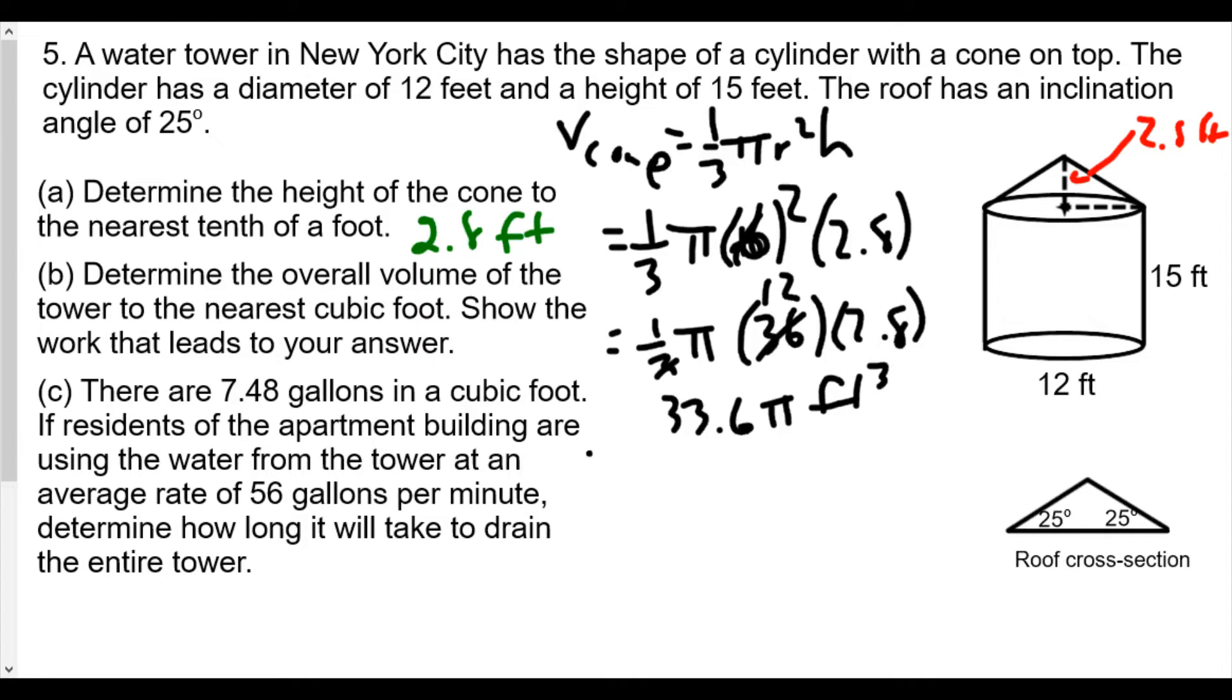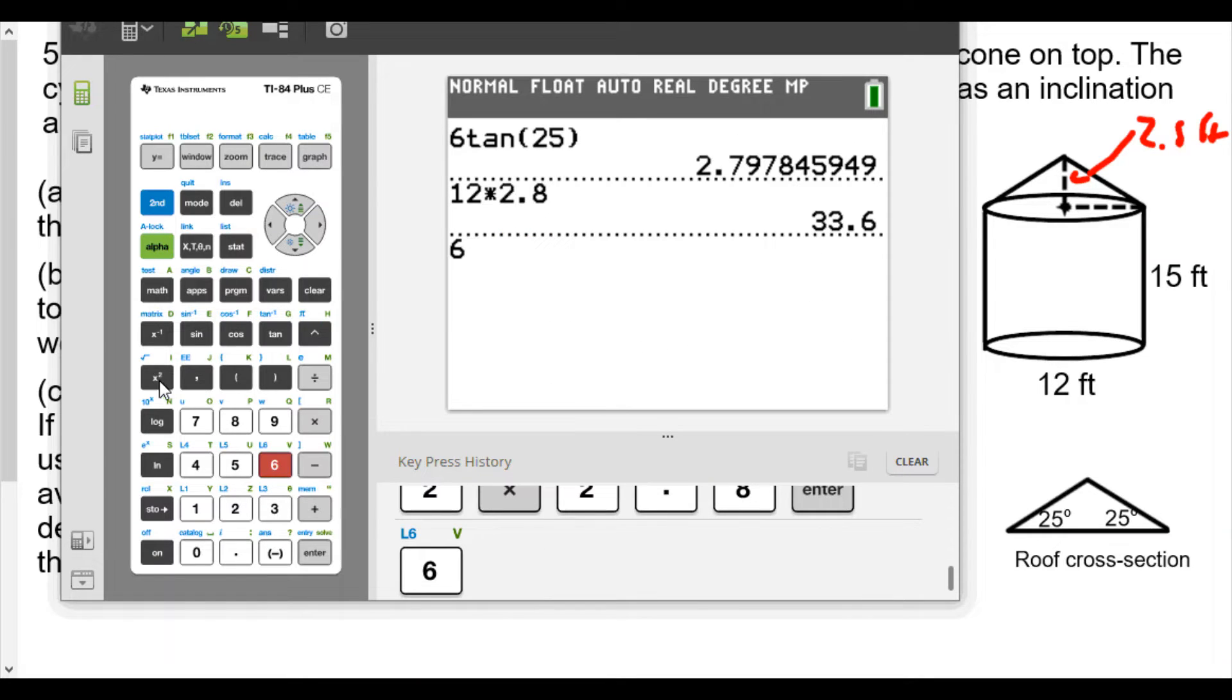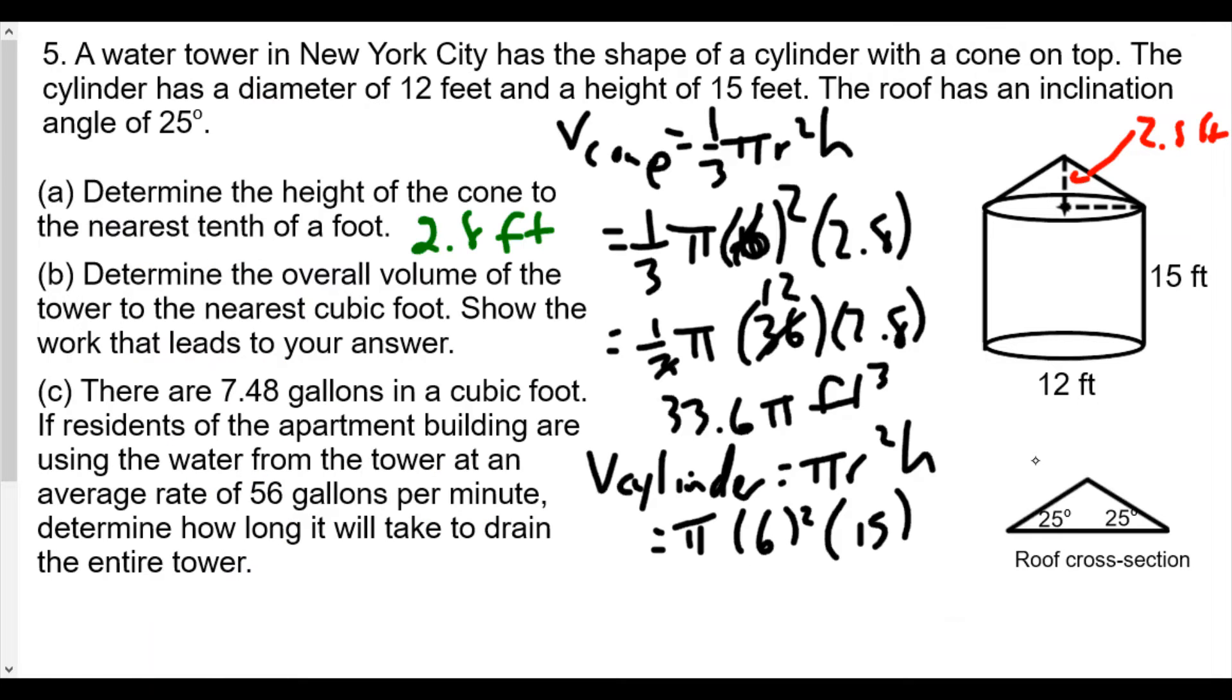We're going to get 33.6π cubic feet. Now for the volume of the cylinder, that's going to be π r² times height, which here becomes π times 6² times 15. Six squared times 15 gives us 540π cubic feet.